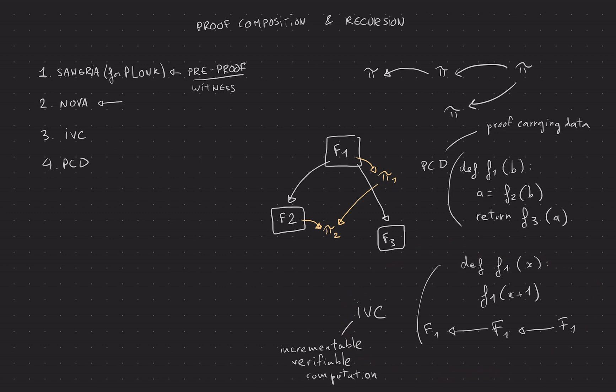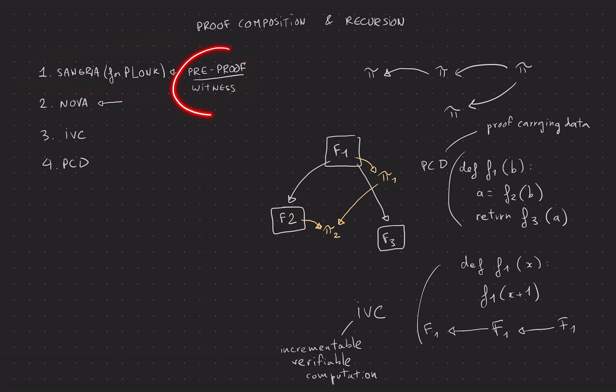That's enough of an intro. I'll give more examples of why these things are useful and how we use them in different crypto systems and protocols, but I want to keep this one short. See you at the next video to talk about Sangria and this concept of pre-proof witness, and I'll tell you more about why it's so different from the rest.